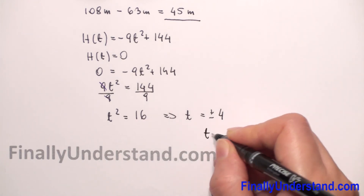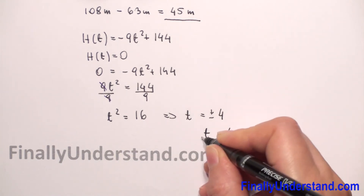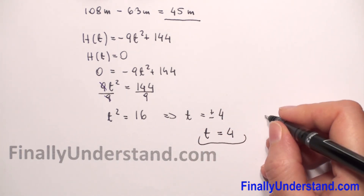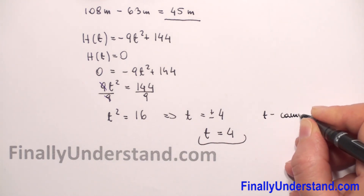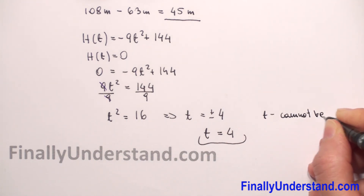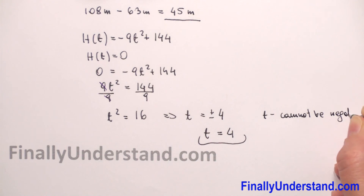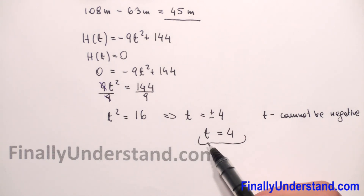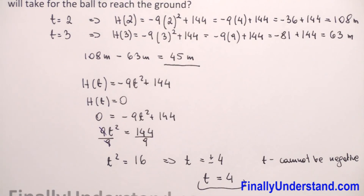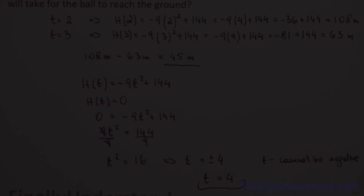So we have that t equals 4. t cannot be negative — the time is a positive value. We found that the ball reaches the ground after 4 seconds.